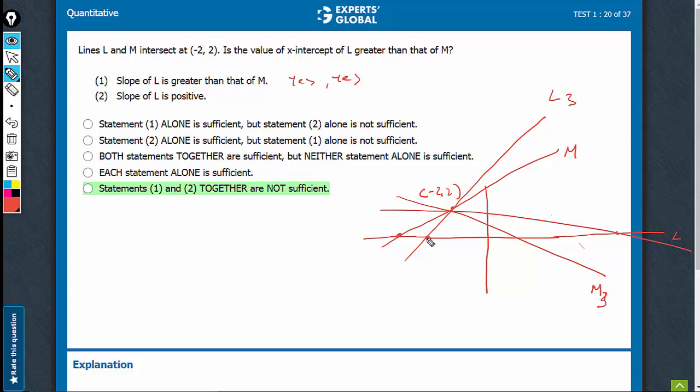In this case, the intercept is negative. In this case, the intercept is positive. So, now, M has greater intercept and therefore, we have a case, the third case, where no is also possible.